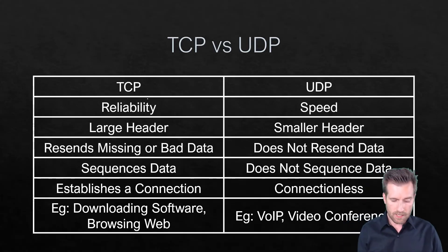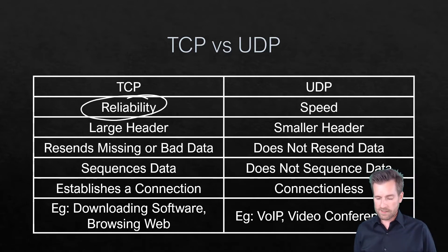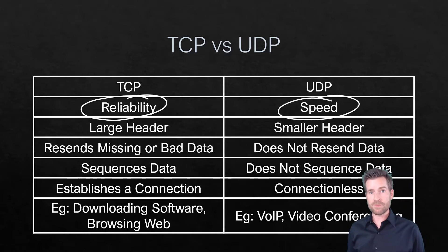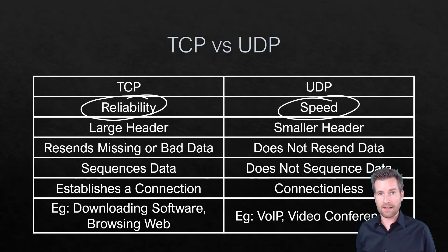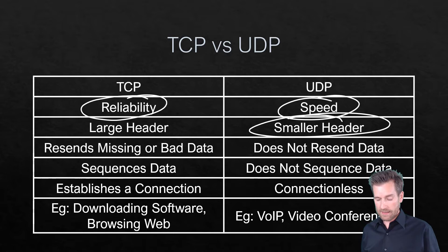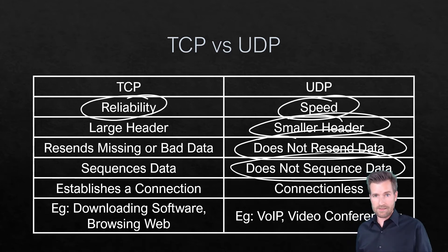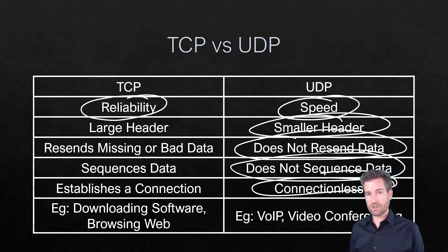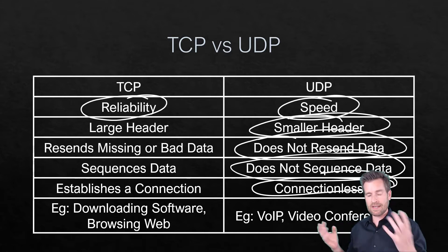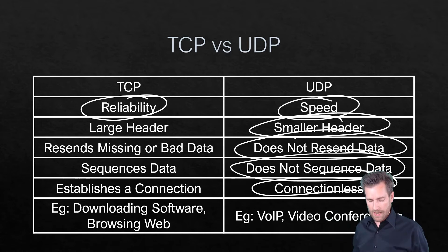TCP is associated with reliability, whereas UDP is all about speed and getting that data over there in a timely manner. For that reason, we have a smaller header. We do not resend data, we do not sequence data — so if there is any sequencing, it has to be handled by an upper layer protocol. Otherwise, it just doesn't matter what order that data comes in. And it's connectionless, unlike TCP where a connection is established before communication happens.